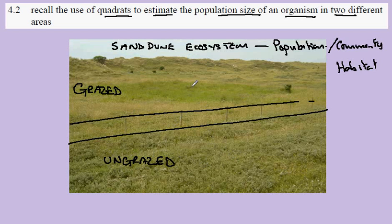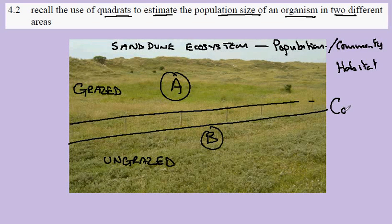So we have two different areas within an ecosystem, and we could choose to study the populations on side A and side B. One of the first things that we could do is to count the number of individuals in the population.